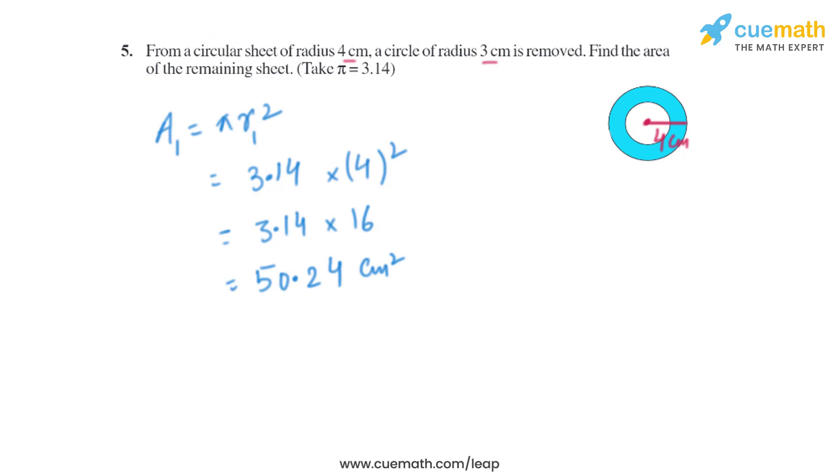of the circle with radius 4 cm. Now let's find the area of the circle when the radius is 3 cm. Let's take it as A₂ = πr₂². So π = 3.14 and the second radius given in the question is 3 cm, so it will be 3.14 × 9 which equals 28.26.